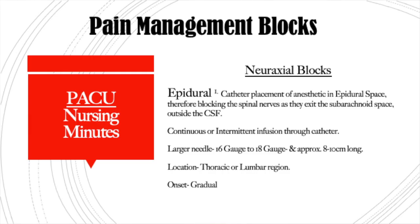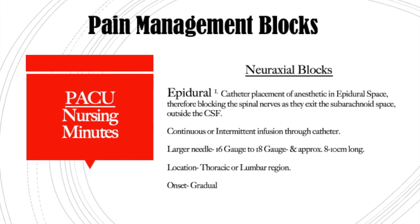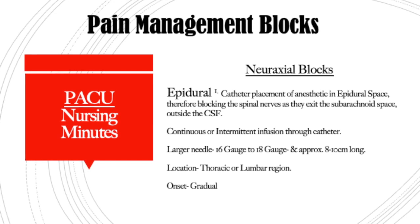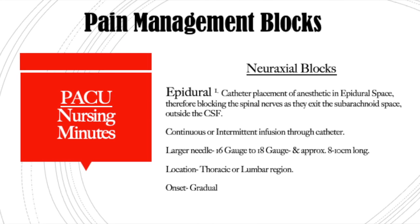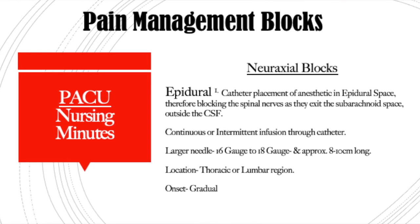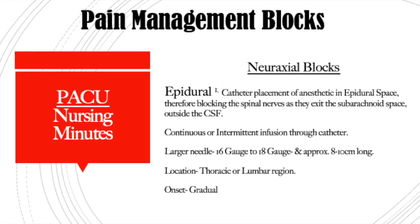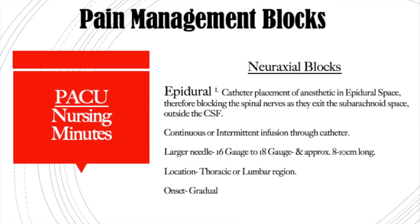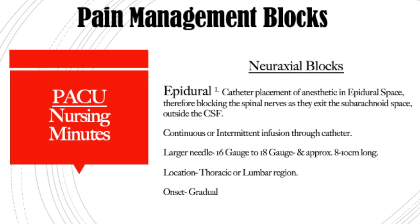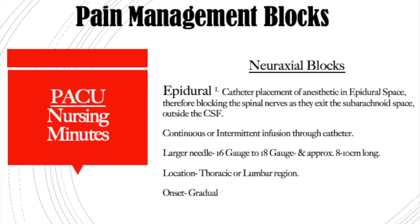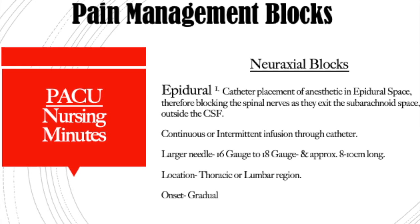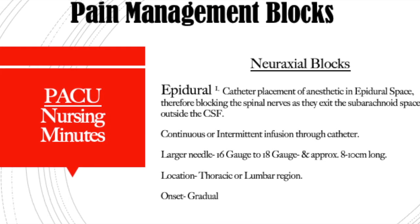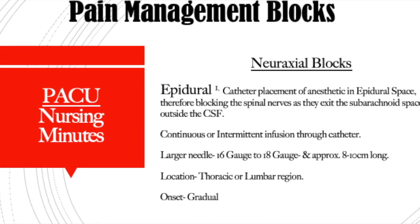The epidural block is when the anesthesiologist places a catheter into the epidural space and an anesthetic is delivered continuously, causing blockade to the nerves as they exit the subarachnoid space. This is a continuous catheter infusion of an anesthetic. It can be used in the thoracic or lumbar region, and it has a gradual onset with less profound effects than spinal anesthesia.